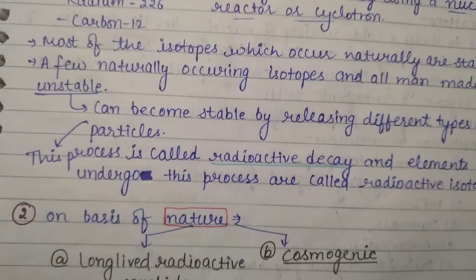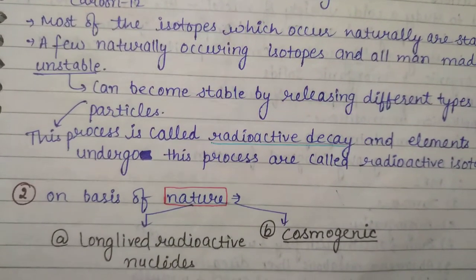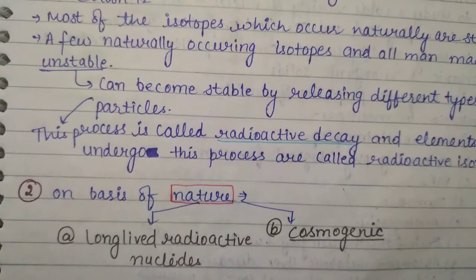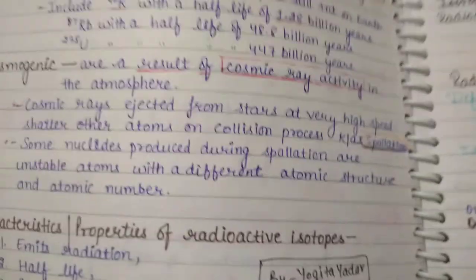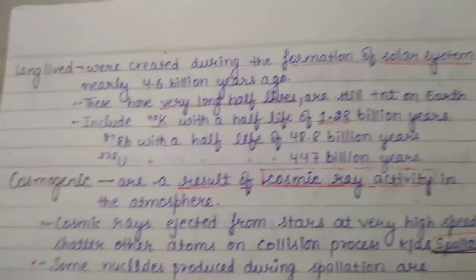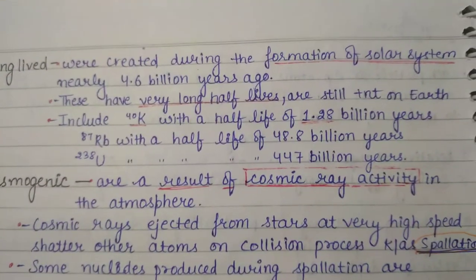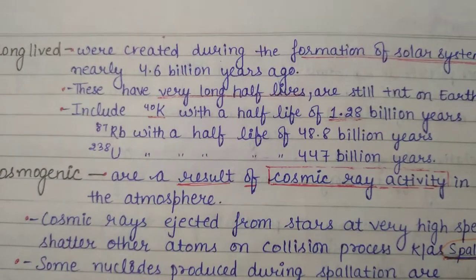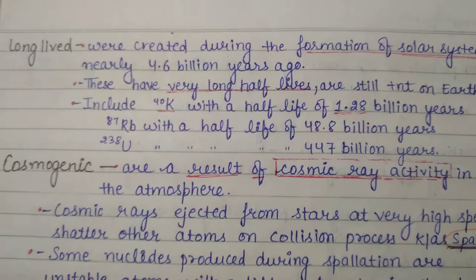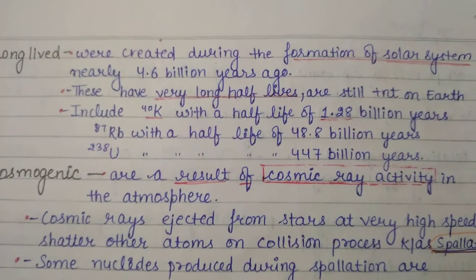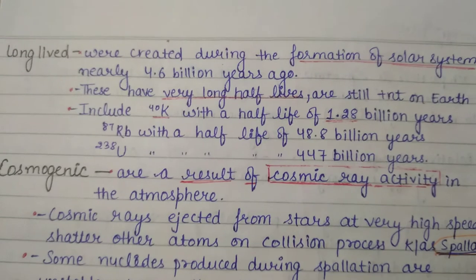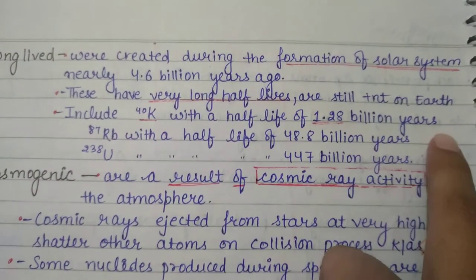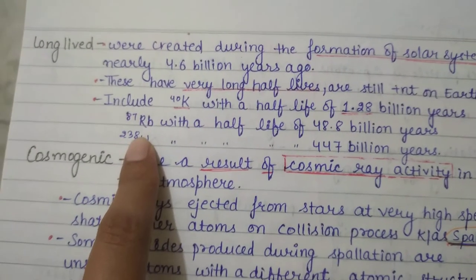Another classification is on the basis of nature, giving two types: long-lived radioactive nuclides and cosmogenic. Long-lived nuclides were first created during the formation of the solar system nearly 4.6 billion years ago. They have very long half-lives and are still present on Earth. An example is potassium-40 (⁴⁰K) with a half-life of 1.28 billion years.